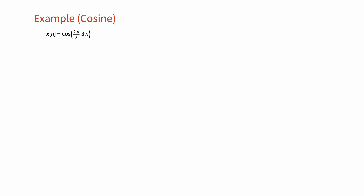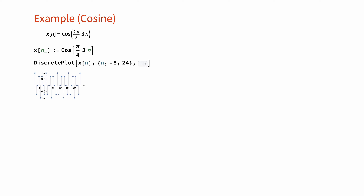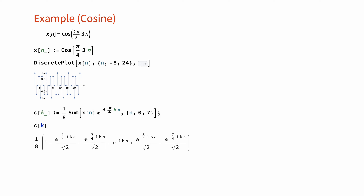As we did in the case of the continuous time Fourier series, let's find the Fourier series coefficients of a periodic cosine sequence. Consider the cosine sequence of period N equal to 8, as shown here. We can also plot it to see how it changes over values of n. Substituting the values into the analysis formula and evaluating gives us the Fourier series coefficients of the cosine sequence, as shown here.